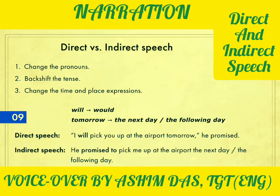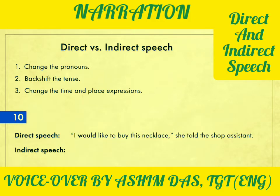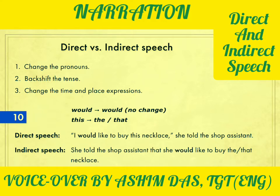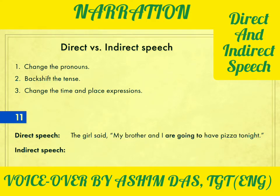With the verb 'promise' you can also say: he promised to pick me up at the airport the following day — using 'to' plus an infinitive verb. Number ten: 'I would like to buy this necklace,' she told the shop assistant. Here the modal verb 'would' is already a past form and there's no way to backshift it — there's no past perfect for modal verbs. So you just say: she told the shop assistant that she would like to buy that necklace. 'This necklace' becomes 'the necklace' or 'that necklace' — both are correct.